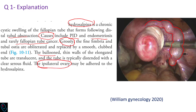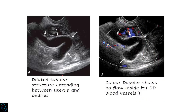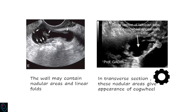The ipsilateral ovary may be adhered to the hydrosalpinx. During ultrasound examination, a dilated tubular structure extending between the uterus and ovaries is visualized, and incomplete septae are seen. Color Doppler will detect no flow inside the mass, differentiating it from a blood vessel. The wall may contain nodular areas and linear folds, and in transverse section these nodular areas give the appearance of a cogwheel.